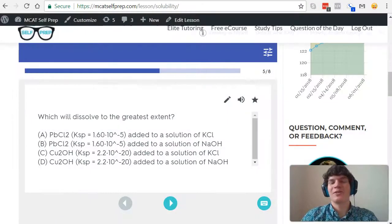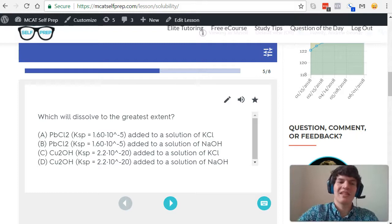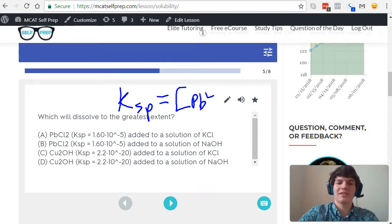If you ever forget how to use KSP values, I think a good first step is to draw out a KSP equation. KSP is equal to the concentration of the ions. In this case we have Pb2+ multiplied by the concentration of Cl-.